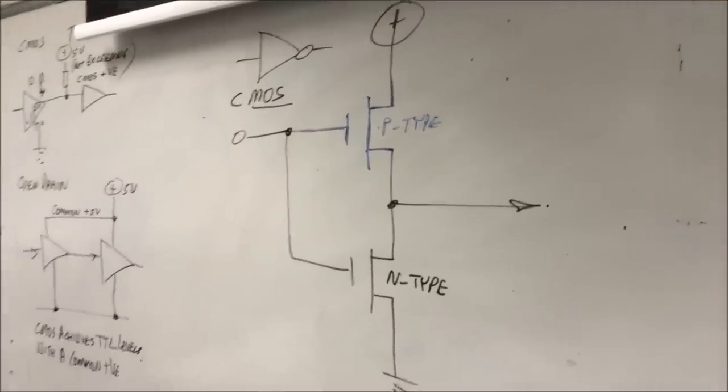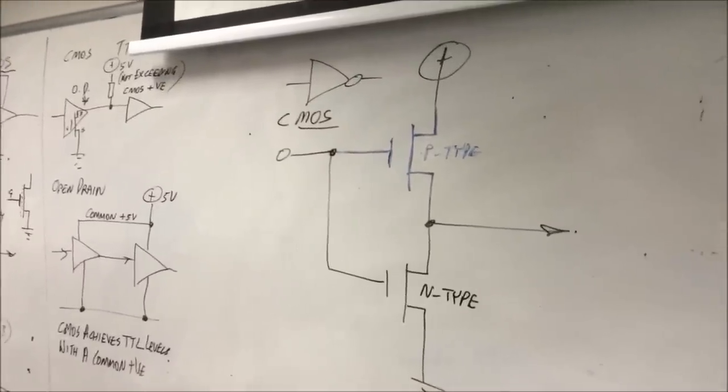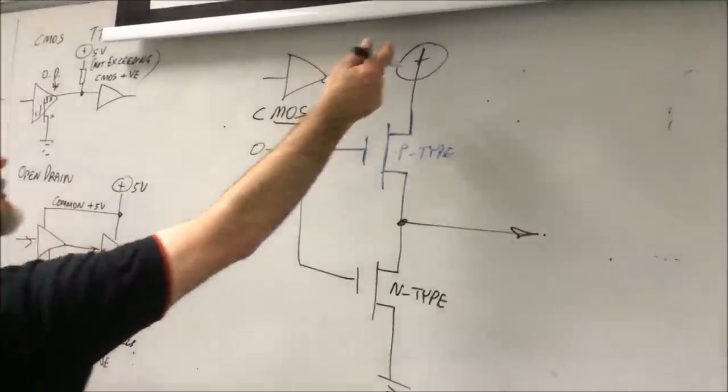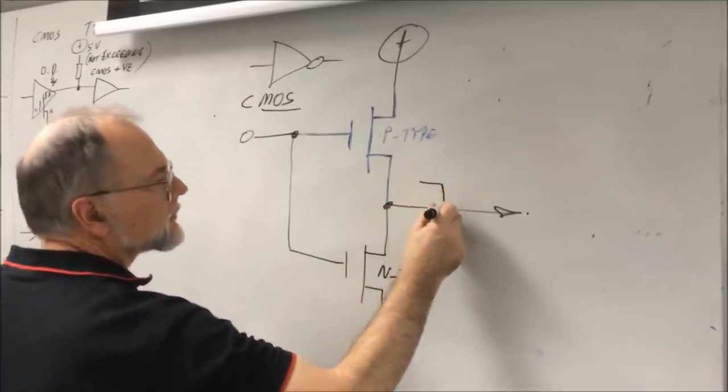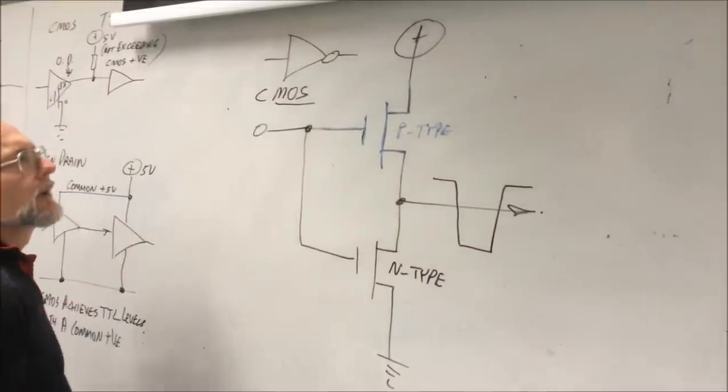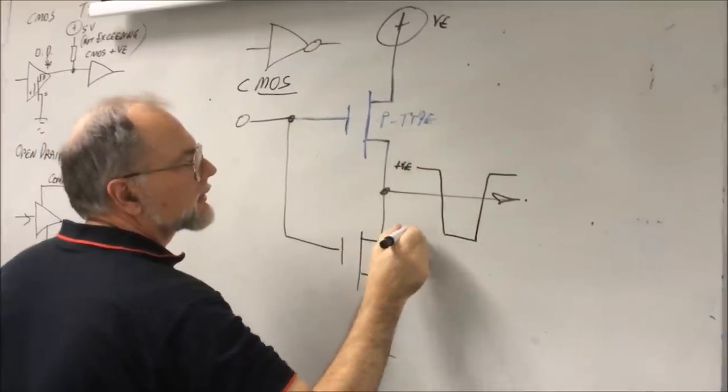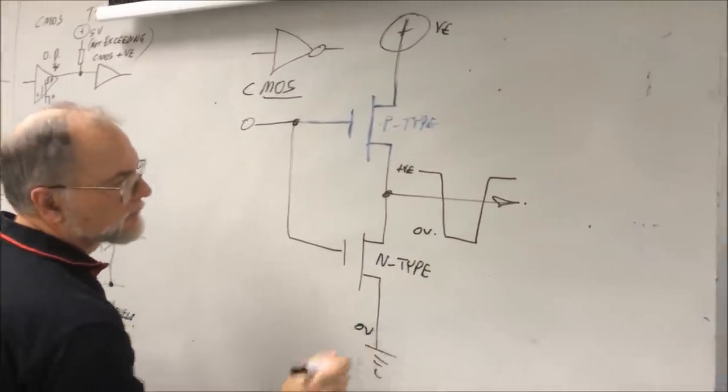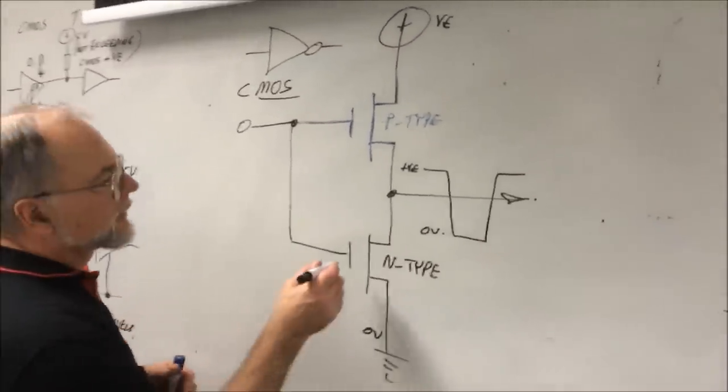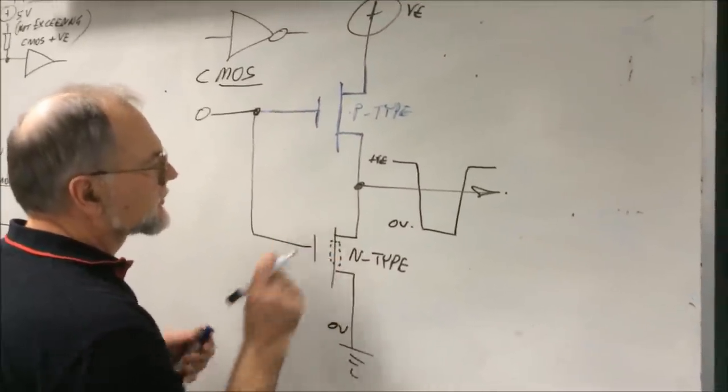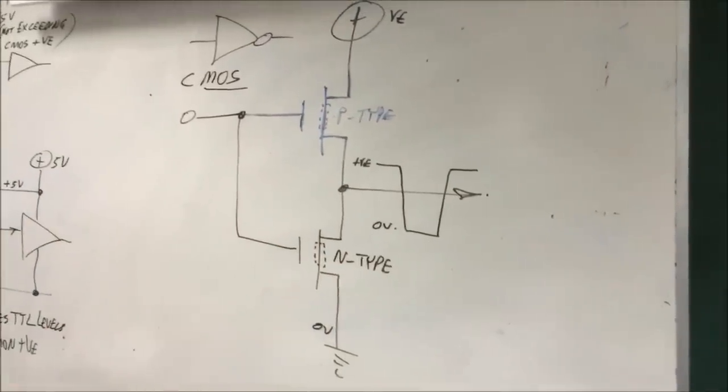CMOS, complementary MOS. It's called complementary because there's one of the P types and one of the N type. Your trained eyes can now notice it's a totem pole output just the same, one to deliver positive out and the other one to deliver negative out. Usually never the two shall be on. If that's plus VE it'll get up to very nearly plus VE and zero volts out, very nearly, limited only by the serial resistance inside these. That's not much in common MOSFETs.